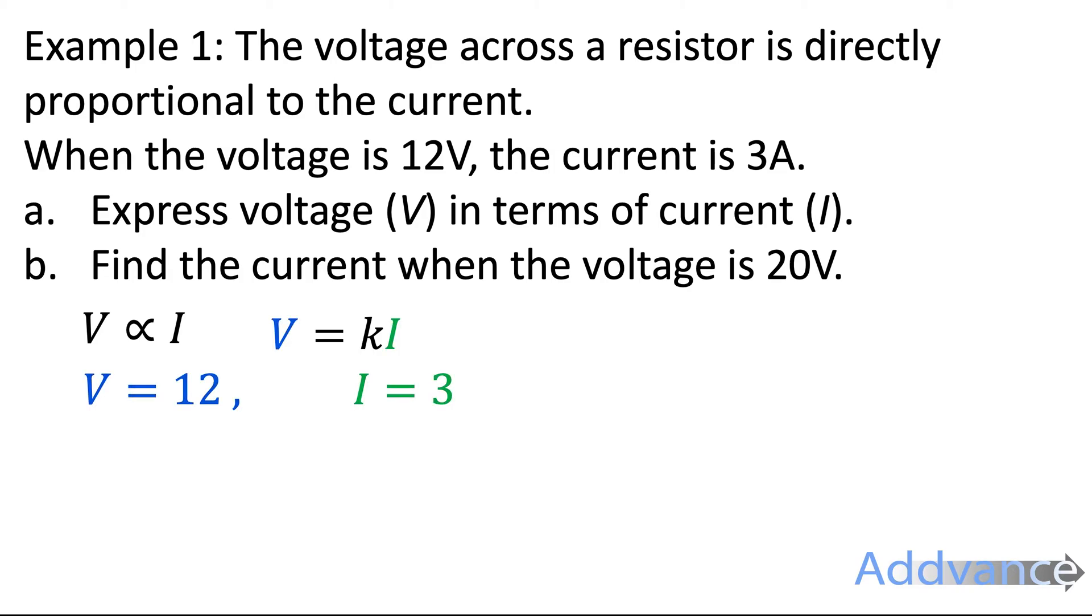And so we can take these numbers and we can put it into the equation. So, 12 equals k times 3. Can you see what k is? Well, we divide by 3 and we get 12 divided by 3 is k. And so k must be 4. And so now we know that the equation for voltage is V equals 4I.